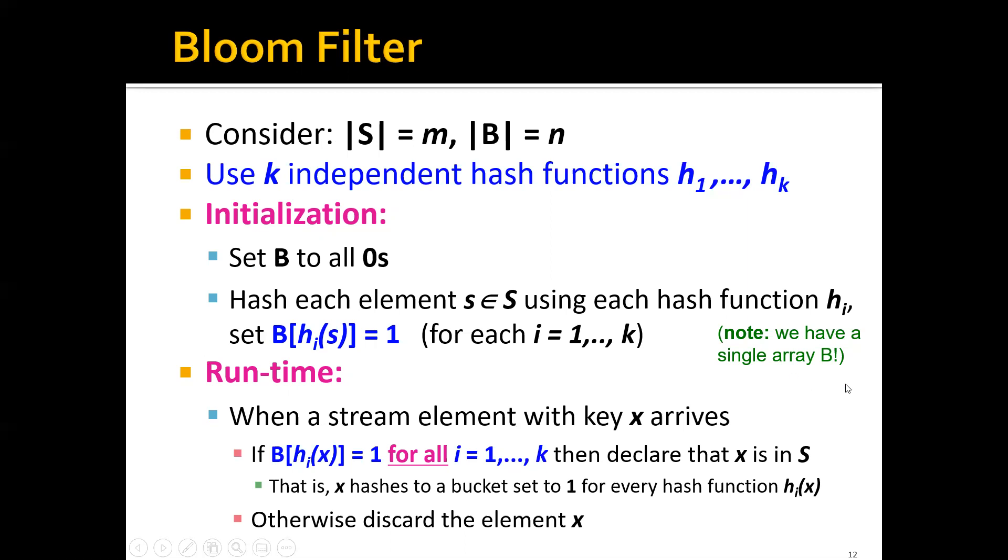After the initialization and during runtime, if a stream element with a key X arrives, we will first hash this key using our k independent hash functions. Basically, we hash it into k different buckets in the bit array and see what the value of these buckets is. We will only declare that X is actually in the set S if all these k hash functions hash this item to bit one. So only if they are all one, we will declare that X is in the set S. Otherwise, we will discard this element X.